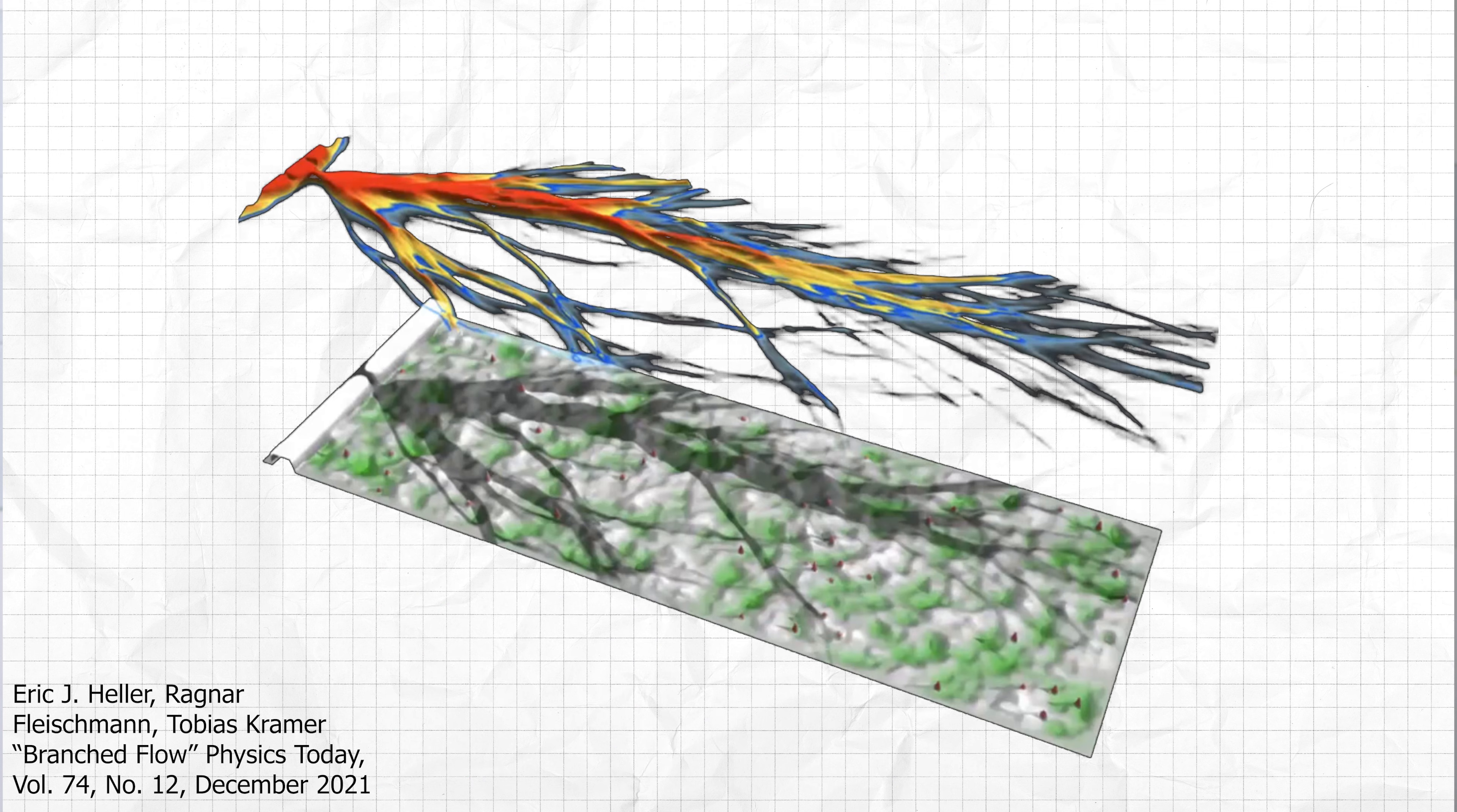The electrons organized themselves into long branching filaments, even though there were no channels in the material guiding them. When researchers saw this data, it quickly became clear that this was a new type of transport phenomenon that previously had not been documented.